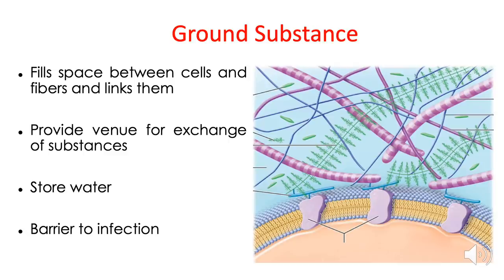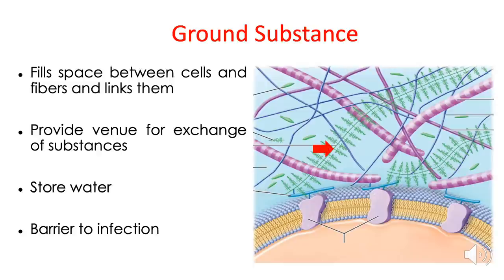The ground substance has several functions. Number one, it fills up the spaces between the cells and the fibers. It also links cells to fibers, fibers to other fibers, and cells to other cells. Take a look at this picture — you have the cell membrane of one of the cells of the connective tissue, and one of the fibers. The green-colored structure that links the two is the ground substance. Other functions of ground substance include: providing a venue for exchange of substances, storing water, and providing a barrier to infection.